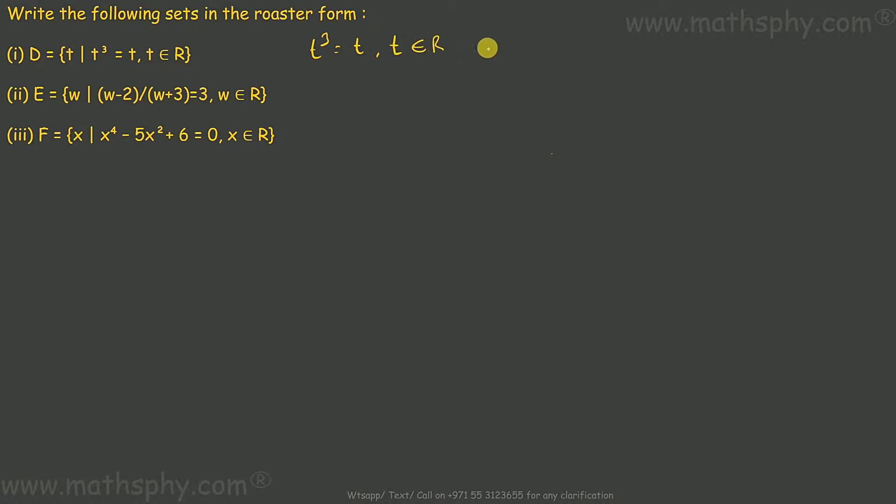Now if I take T as 0, T³ would be 0³ which means 0. If I take T as 1, T³ would be 1³ which means 1. If I take T as negative 1, T³ would be negative 1³ which means negative 1.